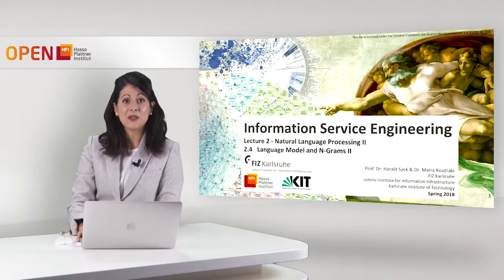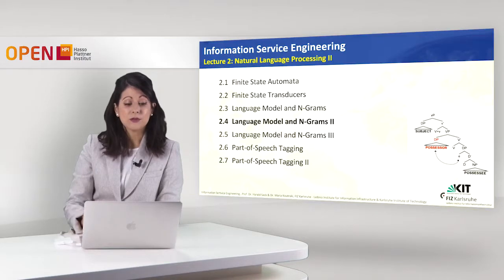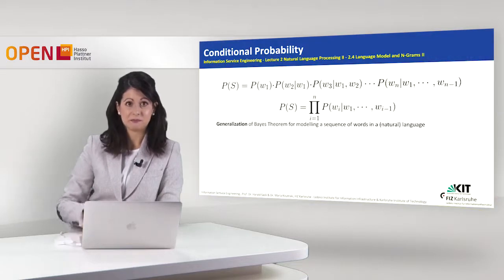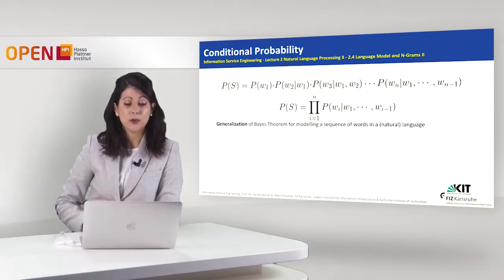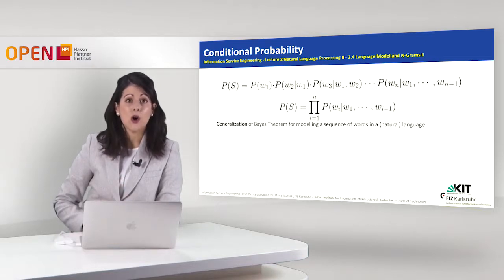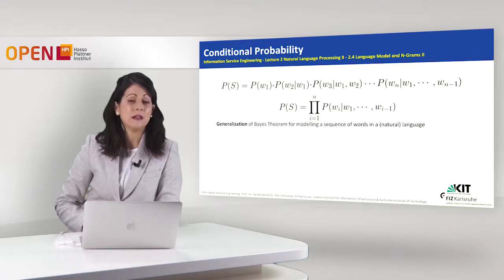Hello, this is Information Service Engineering, lecture number 2, Natural Language Processing, part 2. In this part of the lecture we are going to see the second part of language model n-grams. In the previous part of the lecture we discussed what is a conditional probability and how to compute the probability of a sequence of words using the conditional probability of the words. This is the formula which is the generalization of the Bayes theorem for modeling a sequence of words in a natural language.